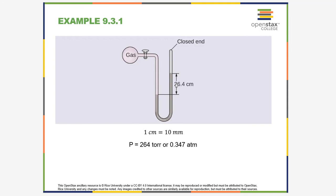Let's look at worked examples. First, notice whether the J-tube has a closed or open end. In this case it's closed, so we don't need to consider atmospheric pressure — we only need the mercury height. The gas is pushing mercury up 26.4 centimeters. Since a torr is a millimeter of mercury, we multiply by 10 to get 264 torr. Dividing by 760 gives 0.347 atmospheres.